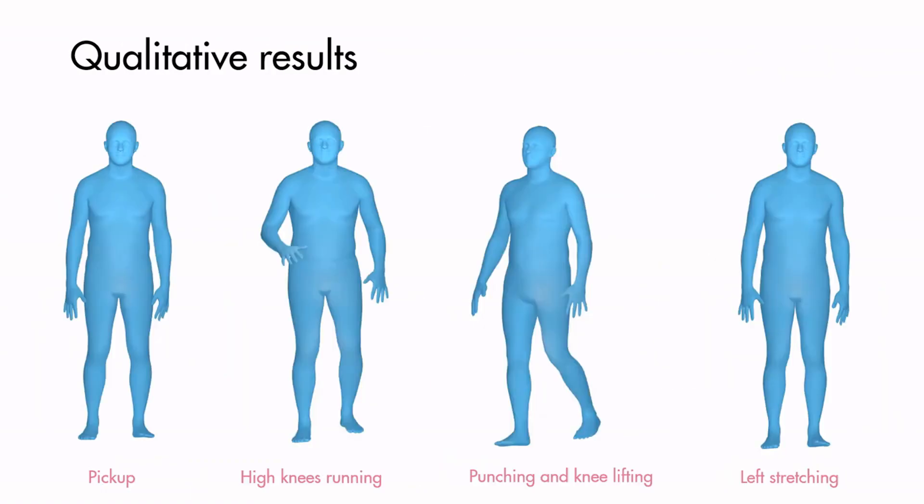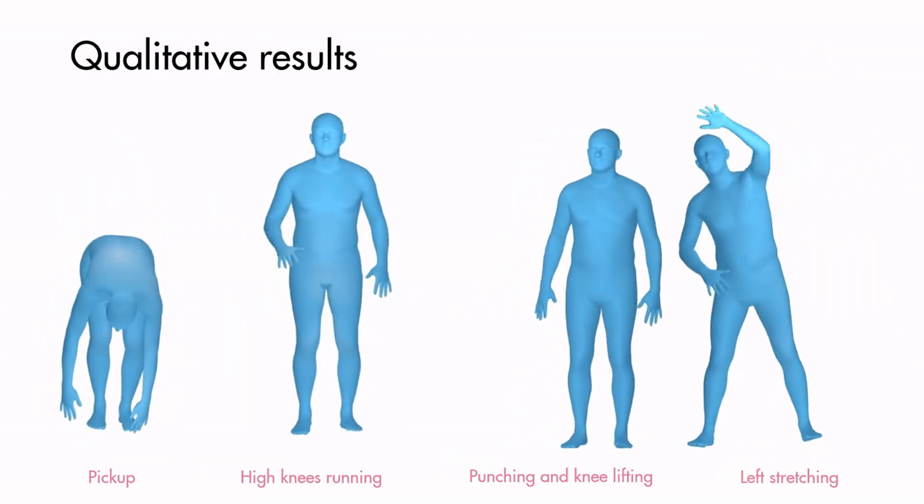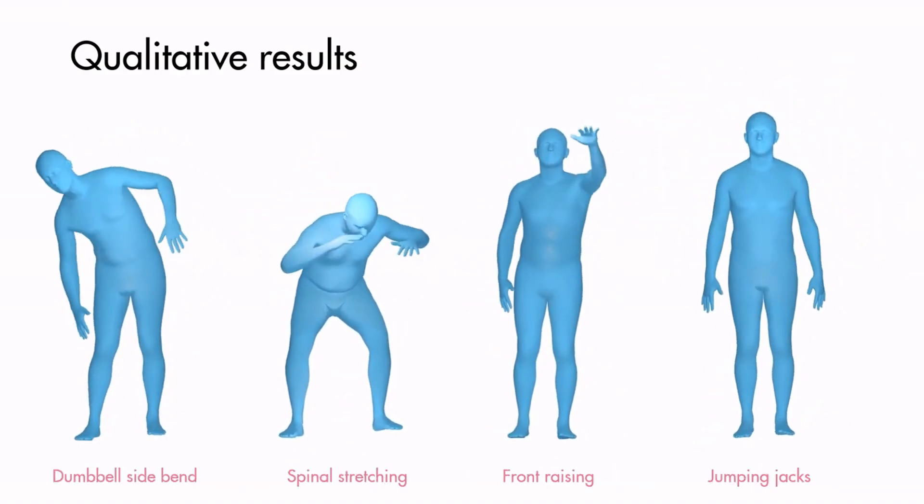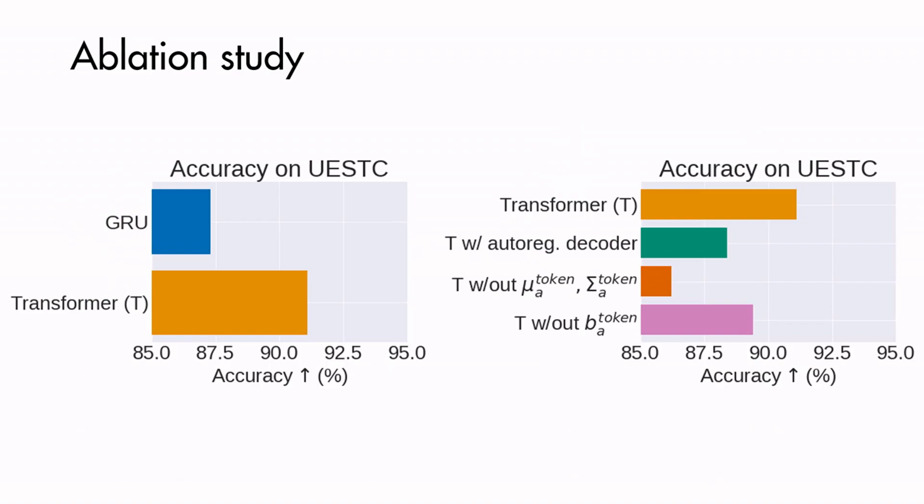Let's look at some generations of ACTOR. We perform several ablations. We see that our non-autoregressive transformer significantly outperforms the GRU variant. We further validate some of the design choices, such as the non-autoregression, distribution tokens, and bias token.